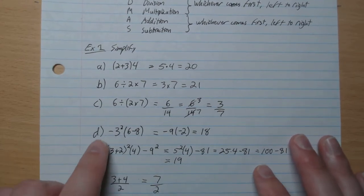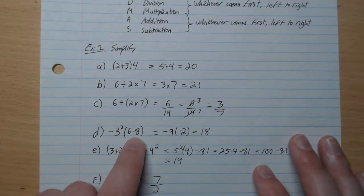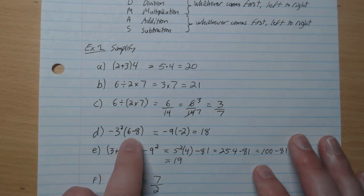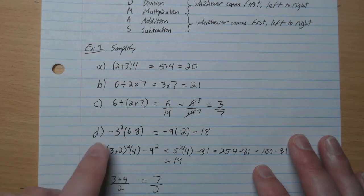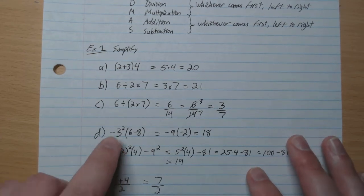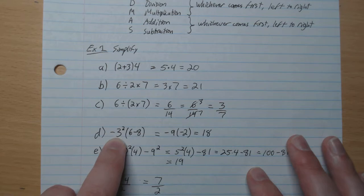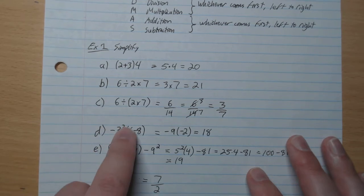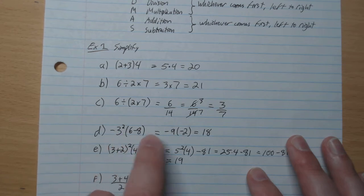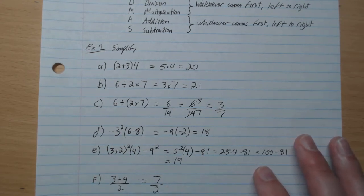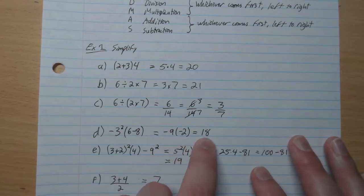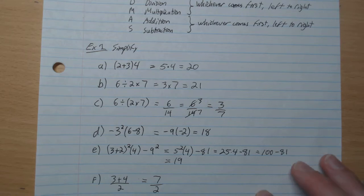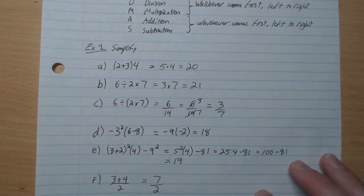D. Negative 3 squared times 6 minus 8. So what's in the bracket here goes first. So 6 minus 8 is negative 2. And you remember from our exponents video, the square is only touching the 3. It's not all negative 3 squared, it's just the 3. So we have negative 9 times negative 2. And we saw in our multiplying integers video that negative 9 times negative 2 gives positive 18. So this simplifies to 18.